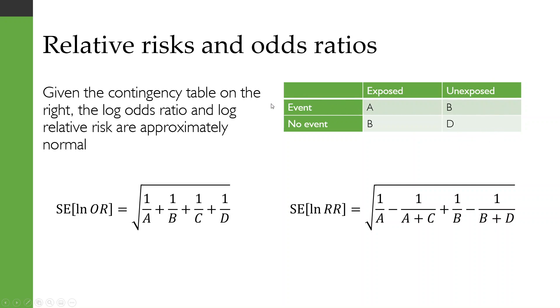And then in this row, it's the number of people who have the event of interest. And in this row, it's the people who don't have the event of interest.